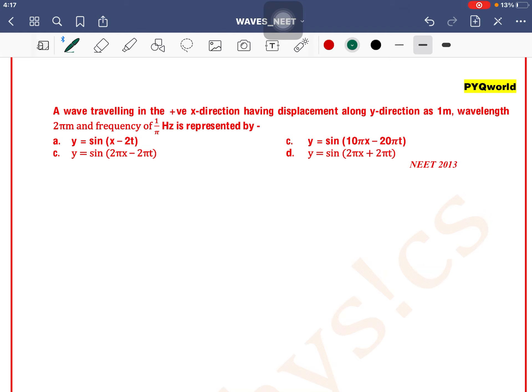A wave traveling in the positive x direction having displacement along y direction as 1 meter, wavelength 2π meter, and frequency 1/π hertz is represented by... So we know that a wave traveling in positive x direction can